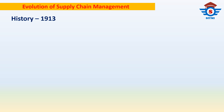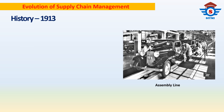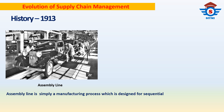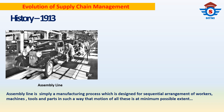We know that cars have changed the life of everyone. Going back in history, the concept of the assembly line by Henry Ford has been a major historical change in manufacturing industries. An assembly line is simply a manufacturing process designed for the sequential arrangement of workers, machines, tools, and parts in such a way that the motion of all these is at a minimum possible extent.